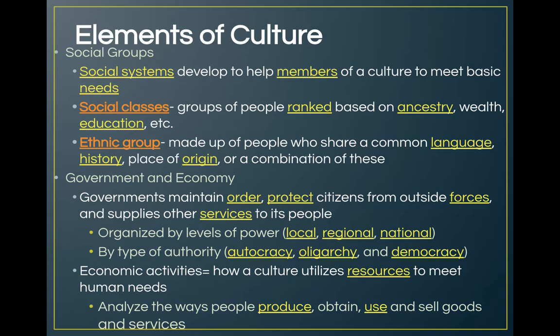The economy is basically how society distributes resources to the people — how we meet different human needs like clothing, food, and shelter. We live in a capitalist system where we earn money and purchase things. There are different systems, like communism, where the government basically supplies everything for you. Economics analyzes the ways people produce, obtain, use, and sell goods and services.